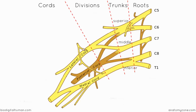There are several different branches coming off the various parts of the brachial plexus. You have nerves coming off the roots, nerves coming off the trunks, and notably no nerves coming off the divisions. Then you have nerves coming off the cords, and then the terminal nerves.